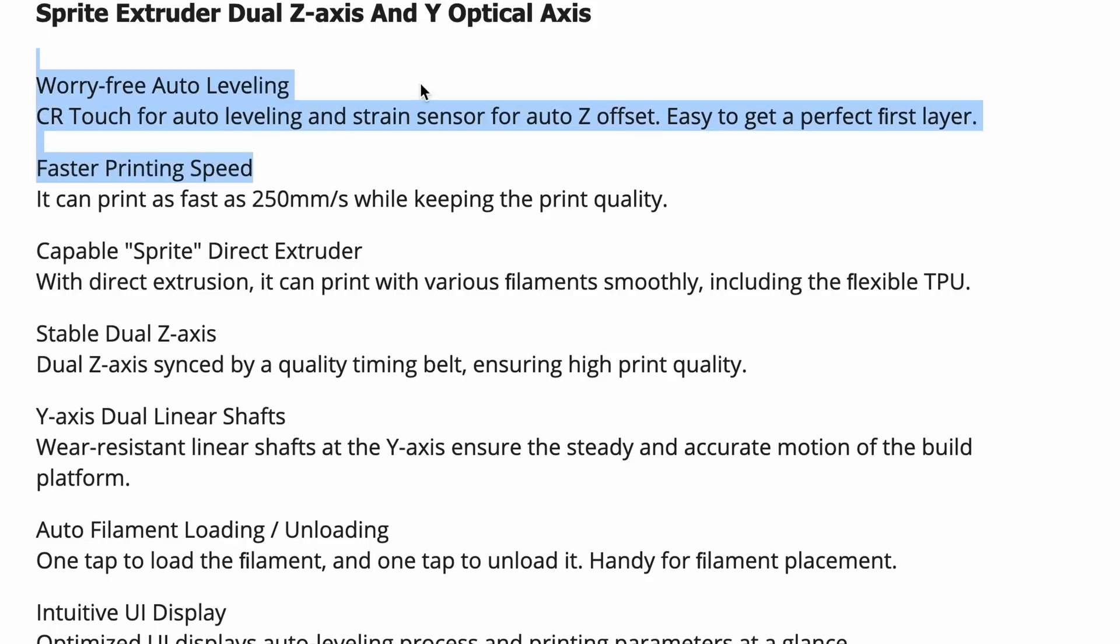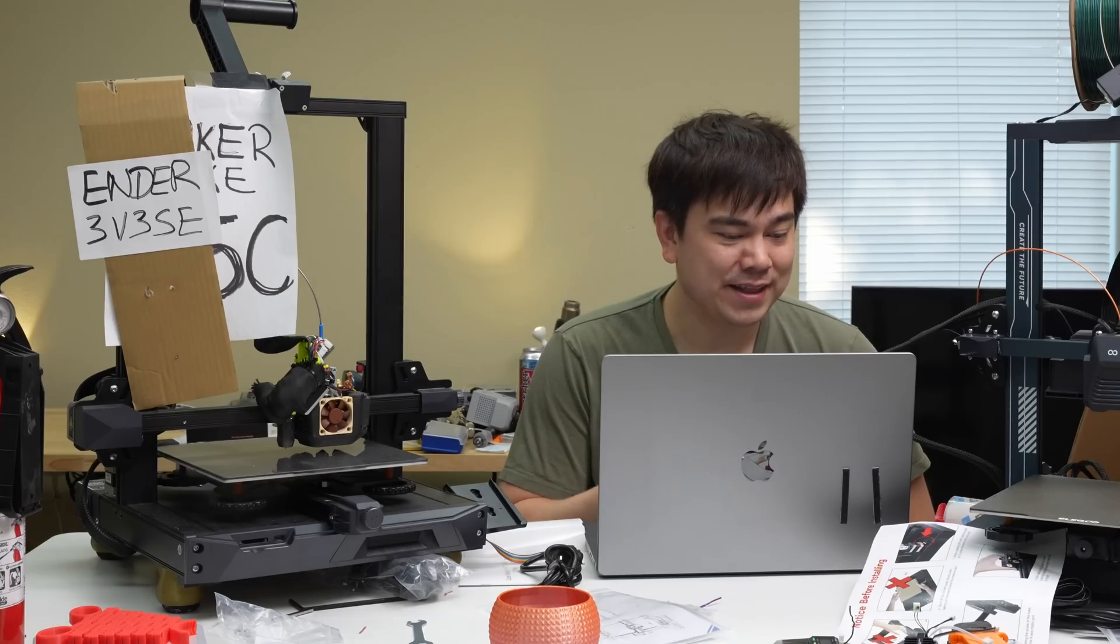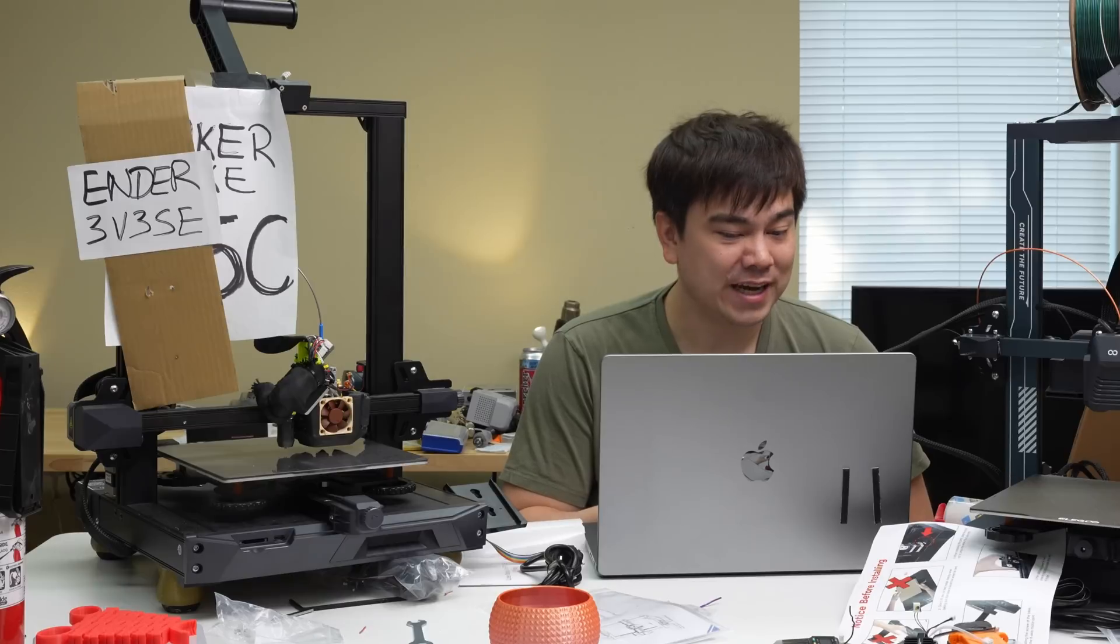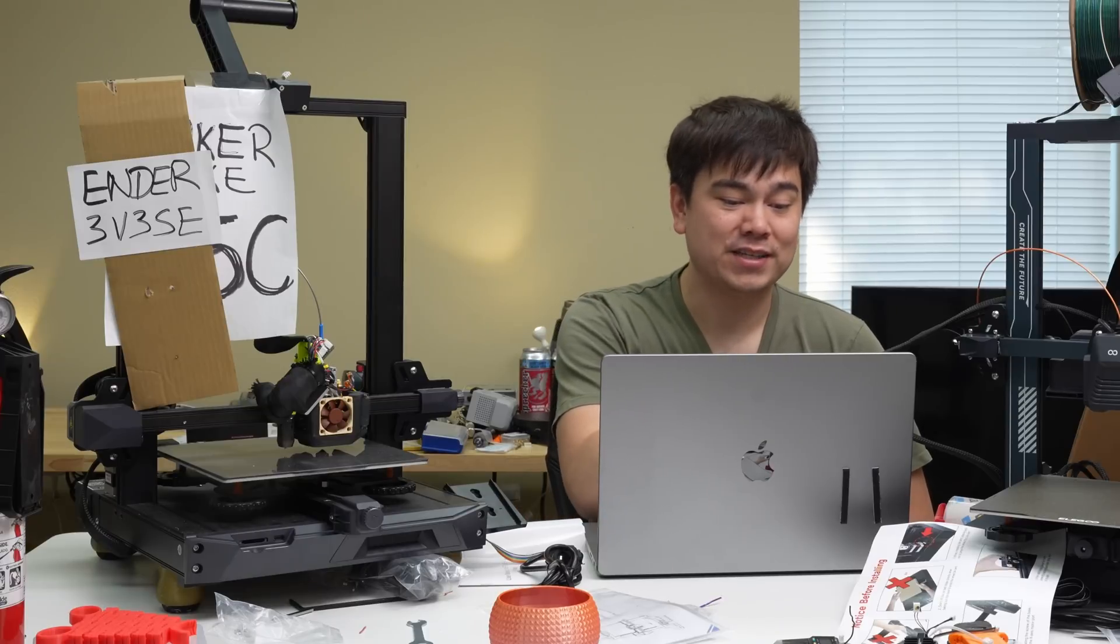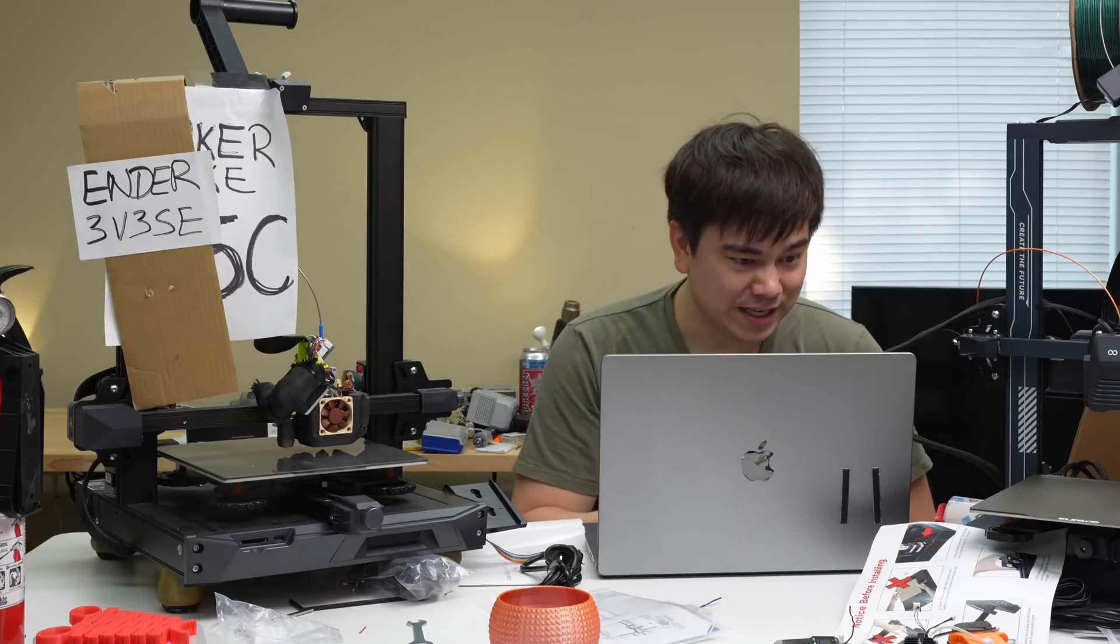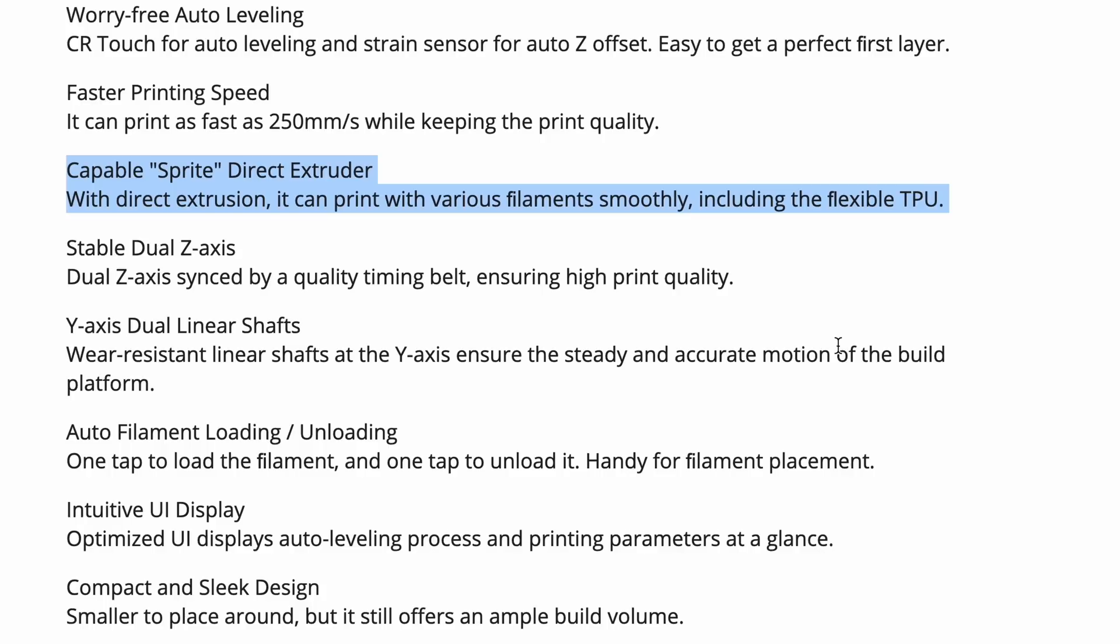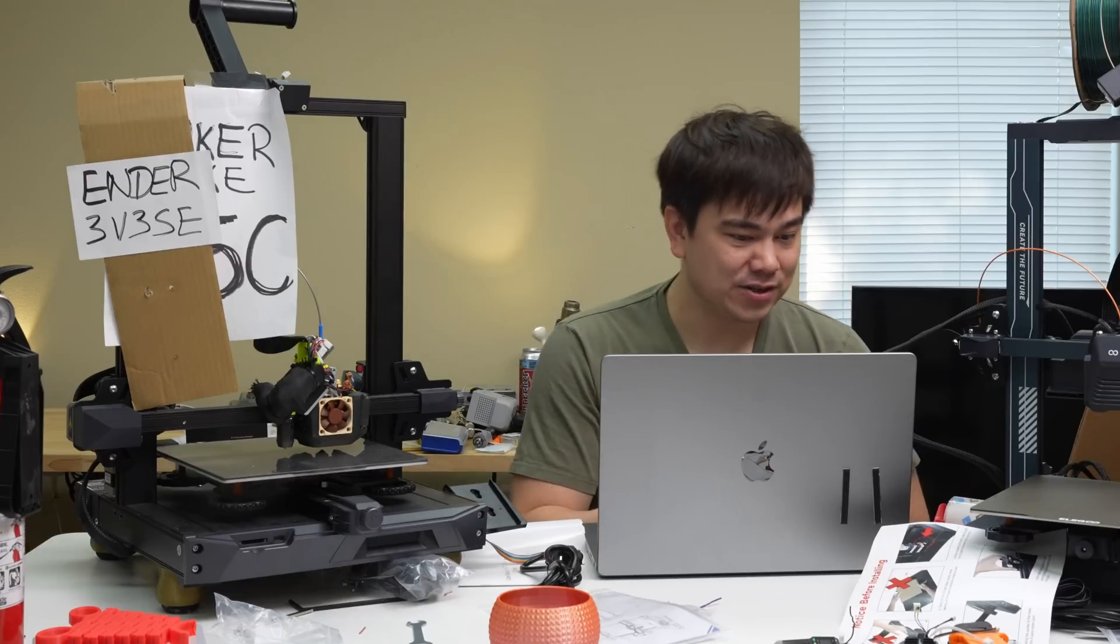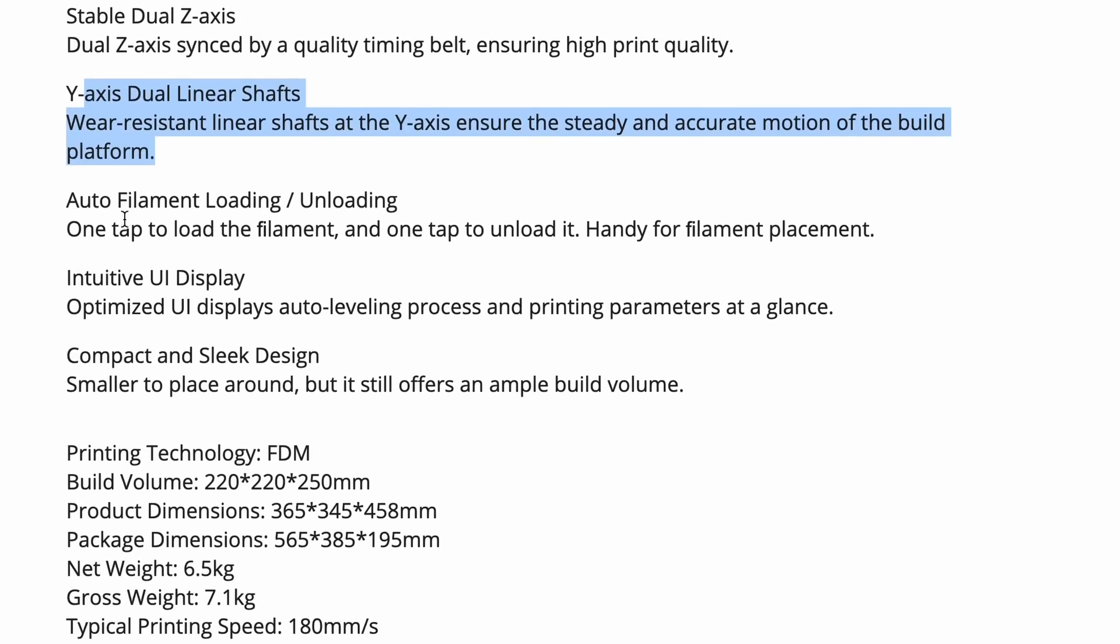Worry-free auto leveling, Auto-Z offset sensor, that's going to be awesome. Faster print speeds, you can print as fast as 250 millimeters per second while keeping print quality. That'll be awesome to see. Given the type of screen they're using, I think they're going to be sticking with Marlin. Marlin has an implementation of Input Shaper now, so they might be using a Marlin-based Input Shaper on this printer. That'll be really exciting to see. Again, it says Capable Sprite Direct Drive Extruder. I really like that extruder. I've been able to push it to 75 cubic millimeters per second, which is absolutely crazy for those high-flow applications. Stable dual-axis Z, Y-axis dual-linear shafts. Okay, yep, we confirmed that here.